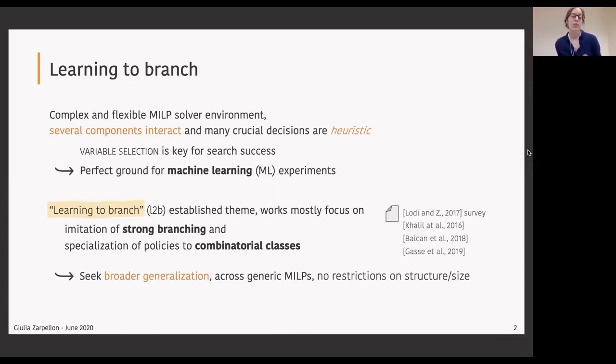In particular we'll look at learning to branch, that is approaching the variable selection problem with machine learning techniques. Learning to branch is nowadays an established theme in the literature with most works focusing on imitating the strong branching policy, which is a valid but expensive branching scheme, and most works are interested in specializing the learned policies to special classes of combinatorial problems like TSPs or set covering instances or facility location.